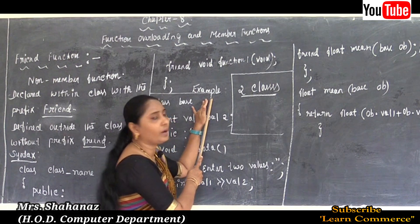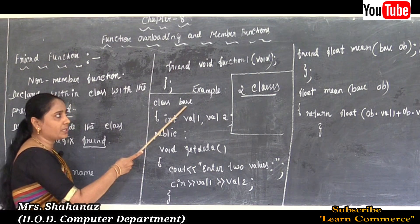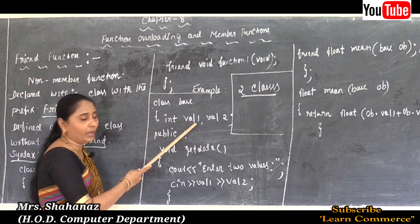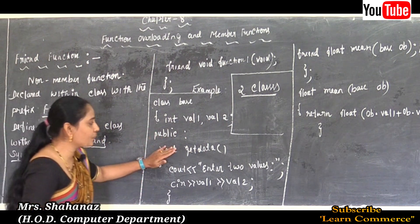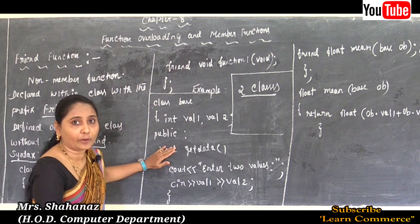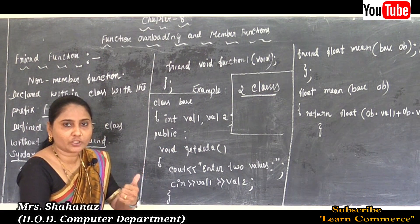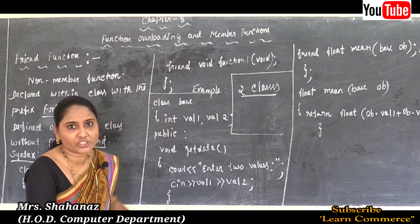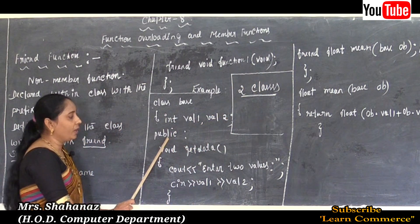A simple example: the class name is 'base', with private member data val1 and val2. Under public, I want to declare the friend function. The friend function can be declared using any access specifier — private, public, or protected — there is no effect on the program. In this program I declare it using the public access specifier.